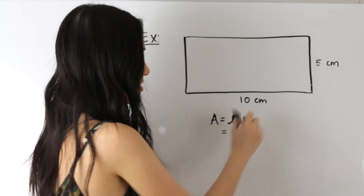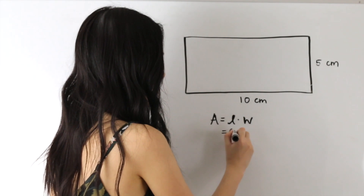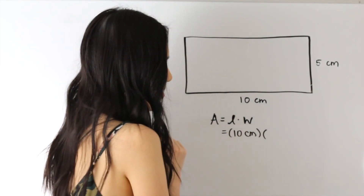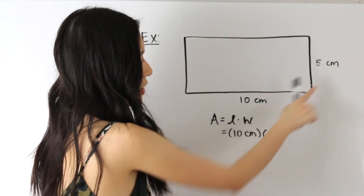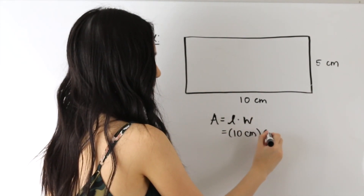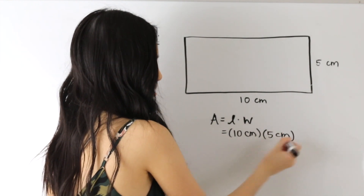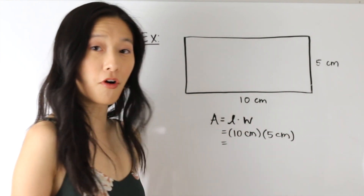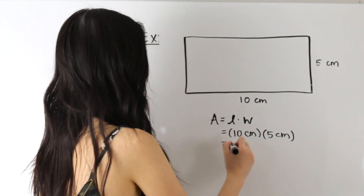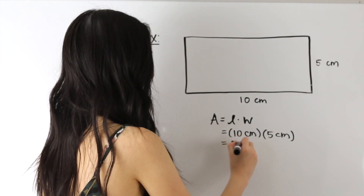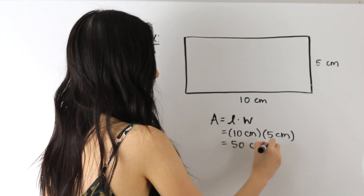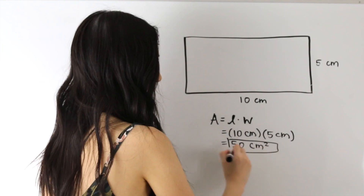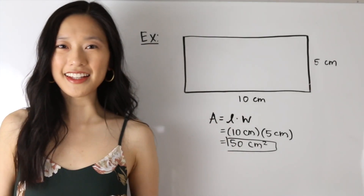For our length we have 10 centimeters, and for our width we have 5 centimeters. The next step is just to perform our multiplication. So 10 times 5 is 50, giving us 50 centimeters squared. And that's our final answer.